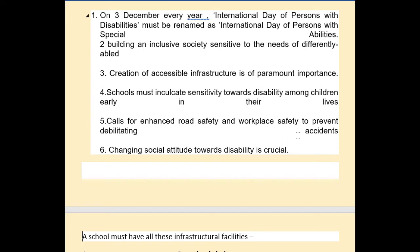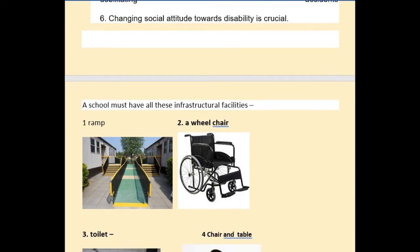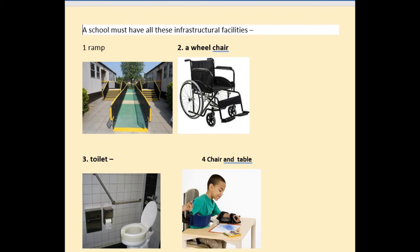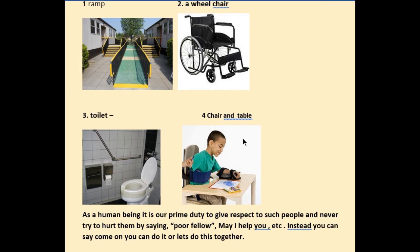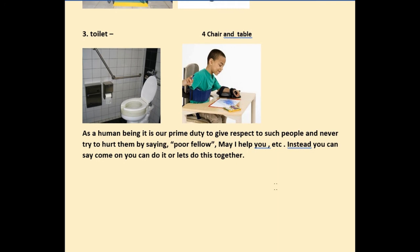We should call for enhanced road safety and workplace safety to prevent debilitating accidents, and changing social attitudes towards disability is very crucial. Schools must have all necessary infrastructural facilities for disabled children — a ramp where there are stairs, a wheelchair available in the classroom, accessible toilets, and chairs and tables suited so that disabled children can sit comfortably and do their work normally.